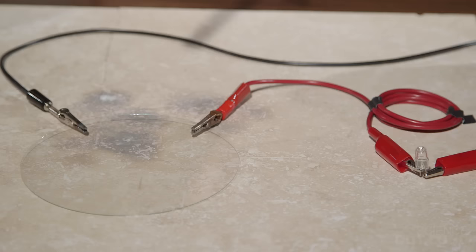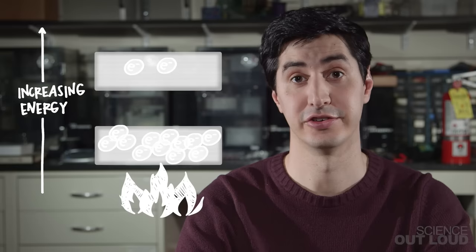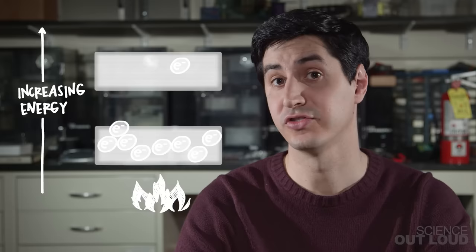Semiconductors fall somewhere in the middle — they have a medium-sized band gap. Technically, I could make glass conduct electricity if I added enough energy through heat to push electrons into a higher band, but that amount of heat would melt or break the glass before it actually conducts. This is true of most insulators — the energy needed is just too high. But in a semiconductor, the band gap is small enough that electrons can jump into the higher energy band so that current can flow.